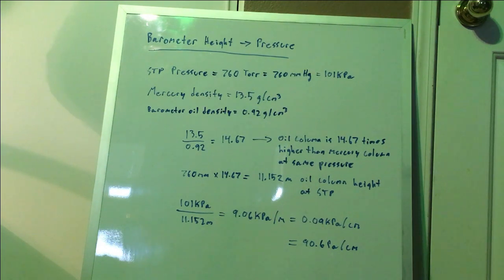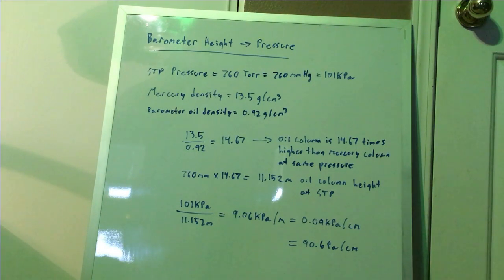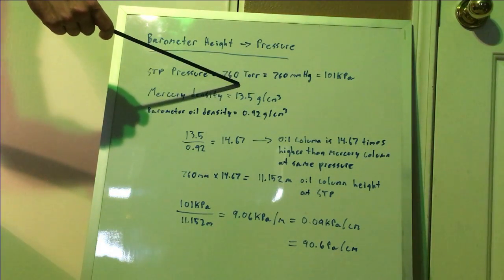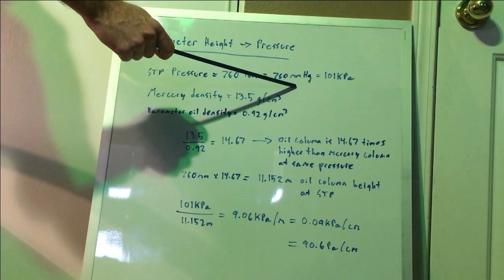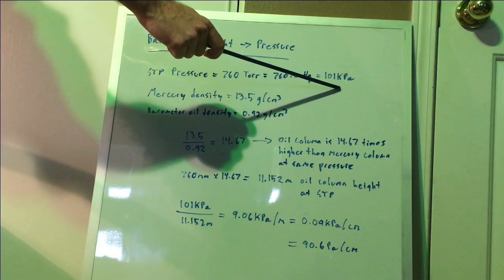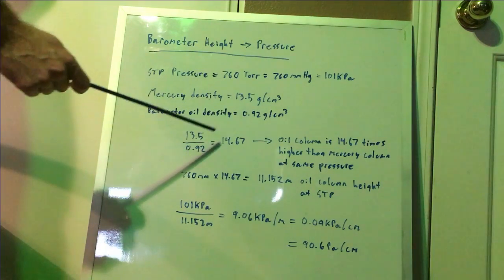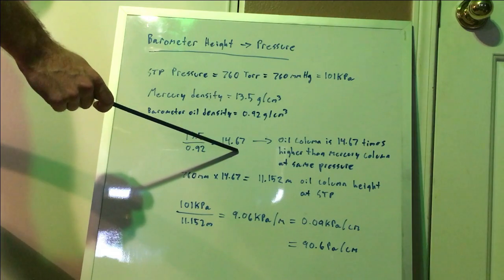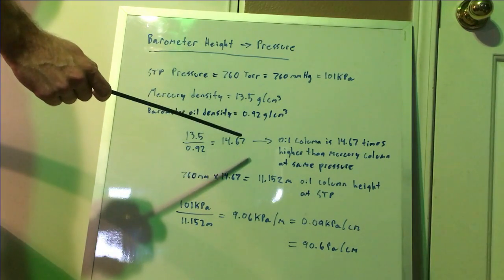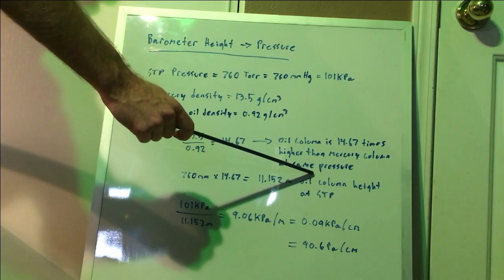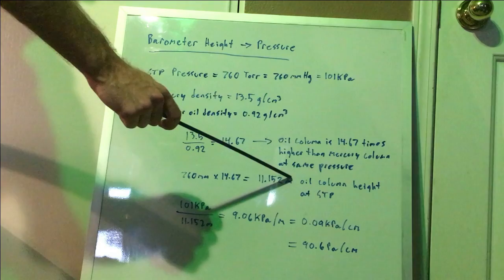So I wanted to take a minute and show you guys how I actually arrived at the pressure index given the height of the fluid in the barometer. So what I did is I started out with the common measurements you see, common value for atmospheric pressure in Torr, atmospheric pressure in millimeters of mercury height inside a barometer, and the same value in kilopascals here. So what I did is I took the density of mercury and the density of the oil in my device, and I divided those to get this multiplication factor. And this basically means that the mercury is 14.67 times more dense than the oil.